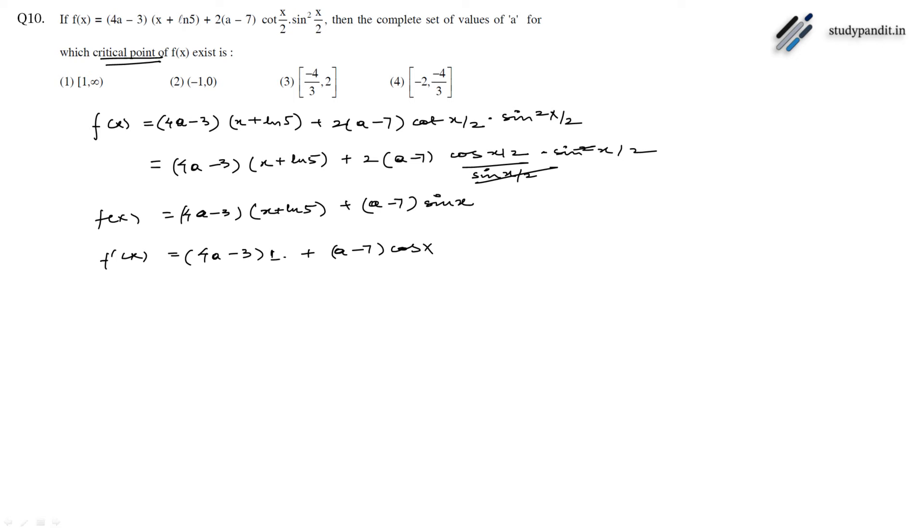To find whether the critical point exists or not, f'(x) should be equal to 0. This is the condition for the critical point to exist. From here we can write cos x is equal to minus (4a minus 3) divided by (a-7).